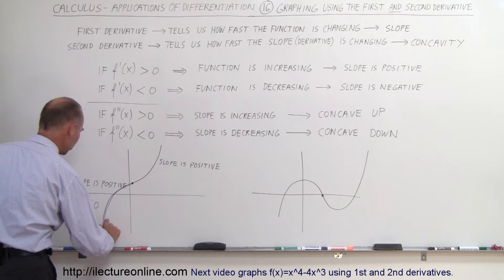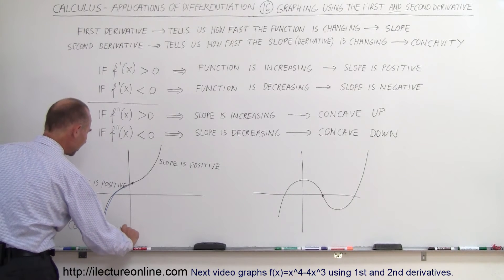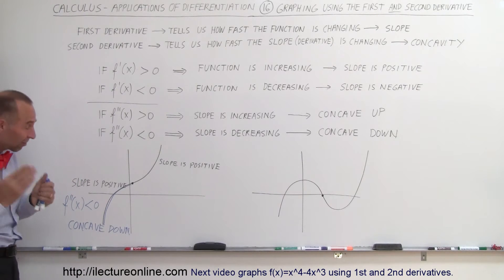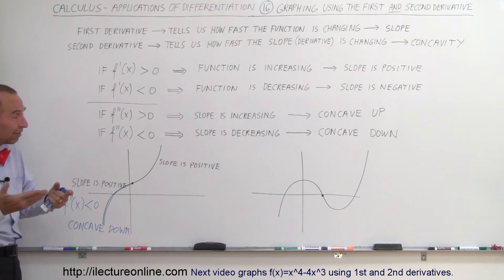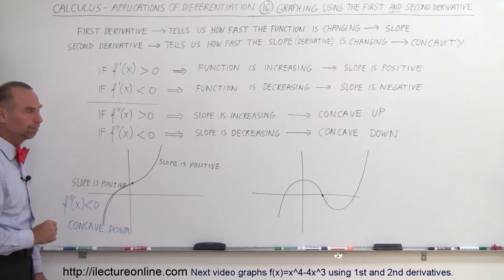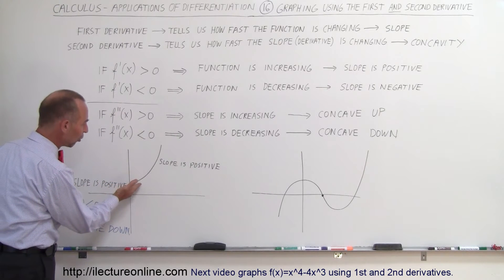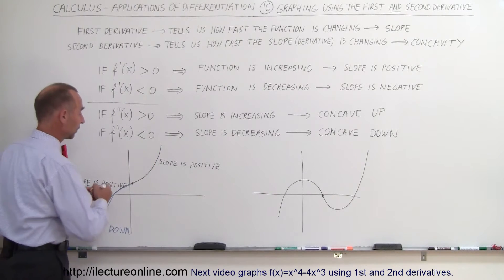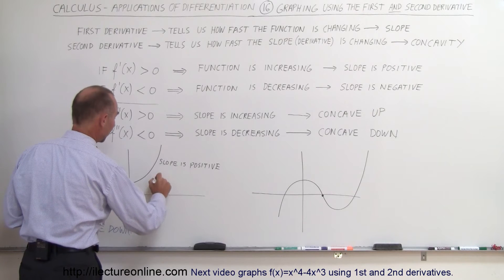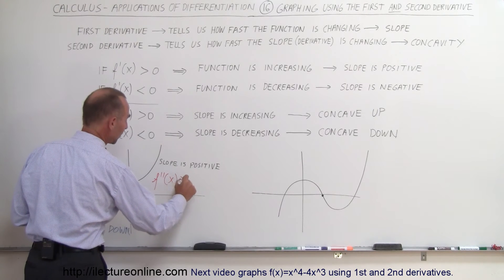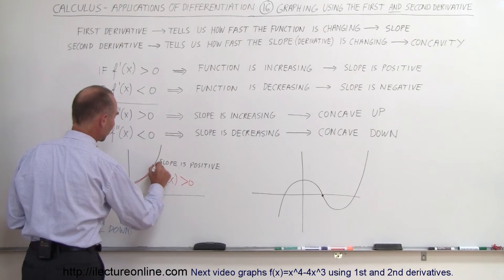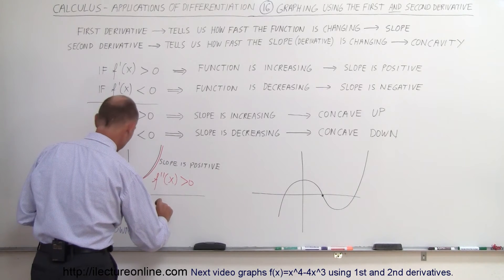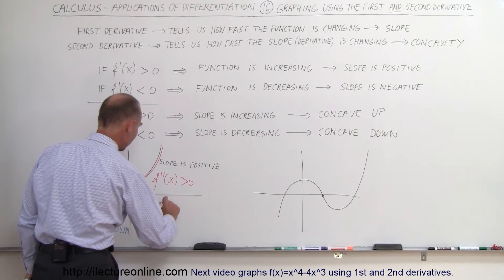This is where the confusion comes in — how can it be concave down if the slope is positive? It simply means that concave down means the slope could be positive or negative, but it's getting smaller. Over here, the slope is getting larger, so the second derivative must be positive. So f double prime of x must be greater than zero. Here you can see the slope is getting steeper, it's getting larger, it's increasing, and so therefore this is called concave up.